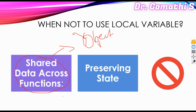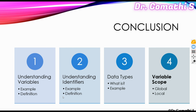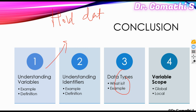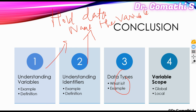In conclusion, we've understood the basics of variables, identifiers, and data types. Variables are used to hold or store data. Identifiers are used to name a variable, a procedure, or a trigger — naming something. Data types tell the system what type of data you are going to store. We also discussed variable scope — global scope and local scope.